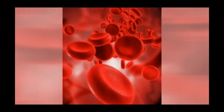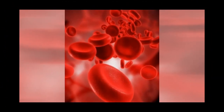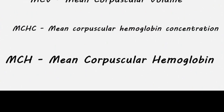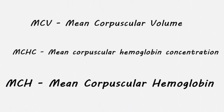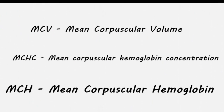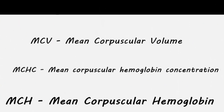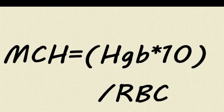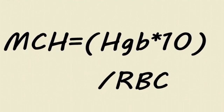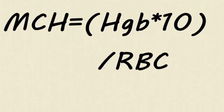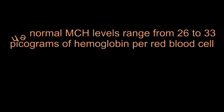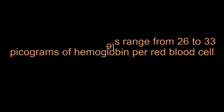MCH is a measure of the oxygen-carrying hemoglobin in a red blood cell. It is one of the three red blood cell indices, and its measurements are done by use of a machine. It is vital in helping with the diagnosis of medical problems. It is calculated by multiplying the total amount of hemoglobin present by 10 and then dividing it by the number of red blood cells present.